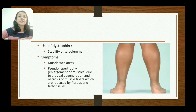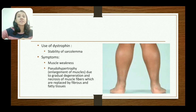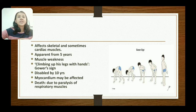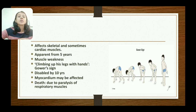Dystrophin is important for the stability of the sarcolemma. In its absence there is muscle weakness and pseudohypertrophy — enlargement of the muscle due to gradual degeneration and necrosis of muscle fibers, which are replaced by fibrous and fatty tissue. It affects skeletal muscle and sometimes cardiac muscle. Symptoms appear from age 5 years: muscle weakness, positive Gower's sign (the child climbing up his legs with his hands), and weakness of shoulder girdle muscles. The child is disabled by age 10. Death results from paralysis of respiratory muscles.